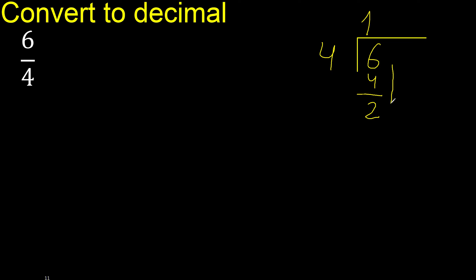There is no number that goes down, therefore complete. Always complete with 0 and a point — point only once. 20.